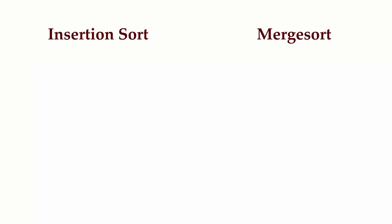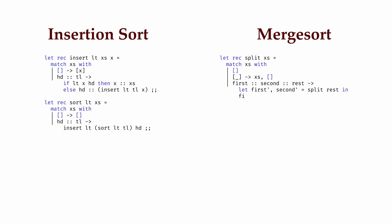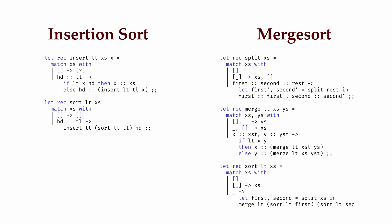Take for example two different algorithms for sorting elements of a list. We have insertion sort, which sorts a list by inserting elements one at a time into an initially empty list, placing each element into its correct sorted place. And we have merge sort, which sorts a list via a divide and conquer strategy of recursively splitting the list in half, sorting each half, and then merging the sorted halves together.